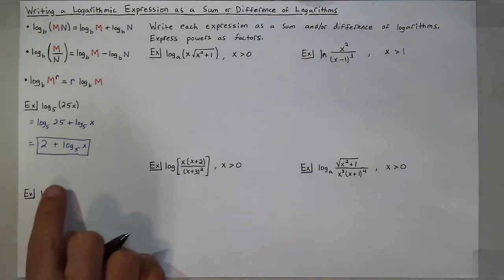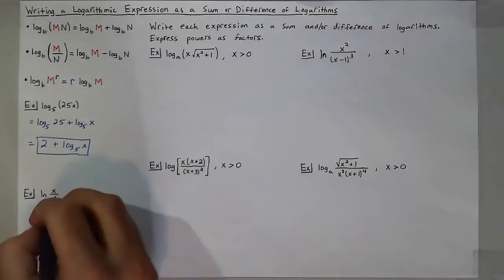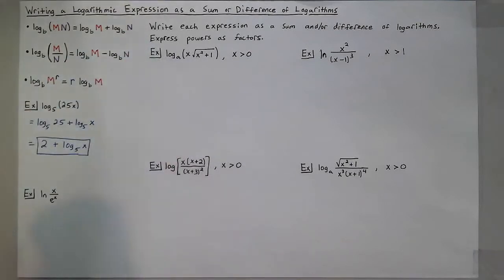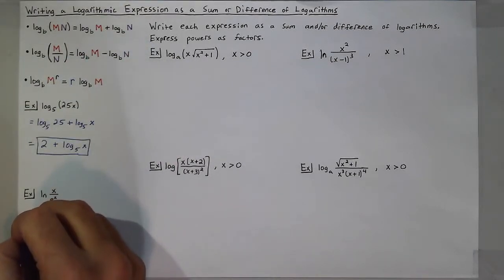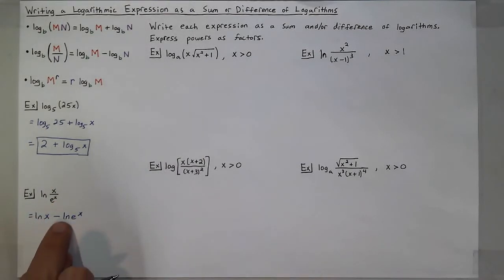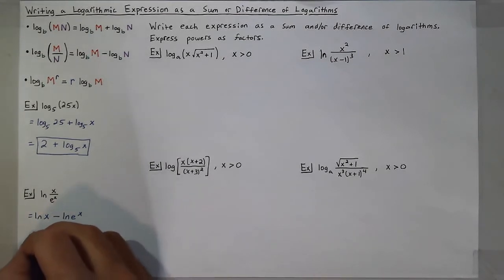The natural log of x over e to the x, since I'm dividing on the inside of the log, I can expand that to be the natural log of x minus the natural log of e to the x. Now the natural log of e to the x, that's log base e of e to the x, so those two can cancel, leaving me with just x. So I get natural log of x minus x.